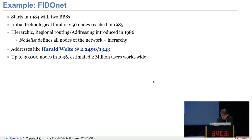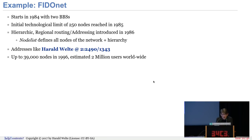FIDO started allegedly in 1984. It reached a limit of 250 nodes in 1985 — apparently a single uint8 was used for the node number. Then in 1986 they introduced hierarchical regional routing and addressing that was more scalable. At the peak of FIDOnet propagation there were 39,000 nodes — that's BBSs, not individual users — interconnected with an estimated 2 million users worldwide. For a hobbyist amateur network, that's quite impressive.